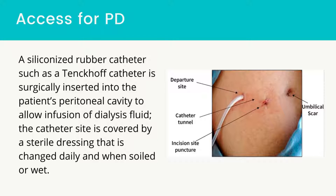The catheter is stabilized with inflatable dacron cuffs in the muscle and under the skin. Over a period of 1–2 weeks following insertion, fibroblasts and blood vessels grow around the cuffs, fixing the catheter in place and providing an extra barrier against dialysate leakage and bacterial invasion. If the patient is scheduled for transplant surgery, the PD catheter may be either removed or left in place if the need for dialysis is suspected post-transplantation.